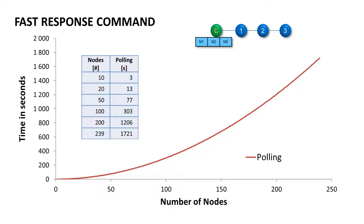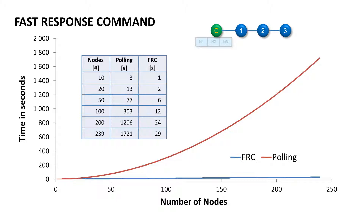Apparently this must be dramatically faster than the standard polling — and it is. The time to collect data with FRC from 10 nodes is 1 second, from 100 nodes it's only 12 seconds, and from 239 nodes it's only 29 seconds.